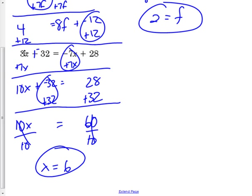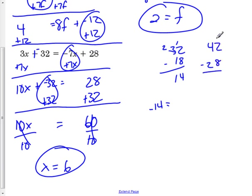If you wanted to plug that in: 6 times 3 is 18, and 18 plus negative 32 gives us negative 14 because the negative value was greater. Now let's plug 6 on the other side: negative 7 times 6 is negative 42, and negative 42 plus 28 gives us negative 14. Negative 14 does equal negative 14, so that worked out for us.